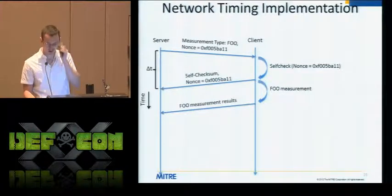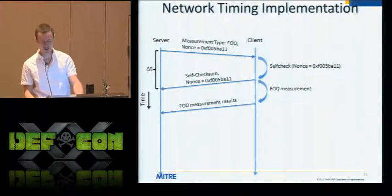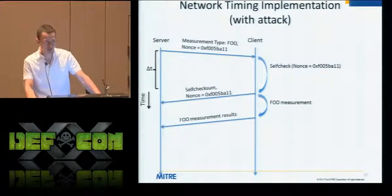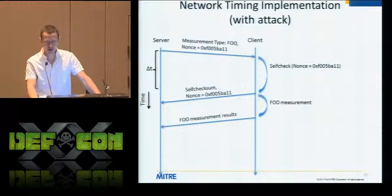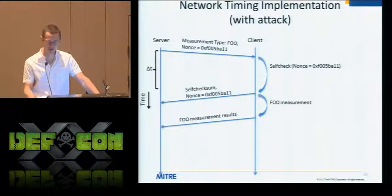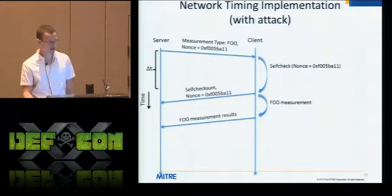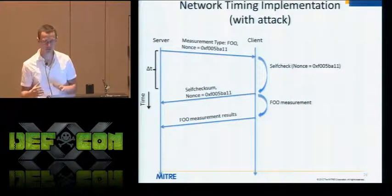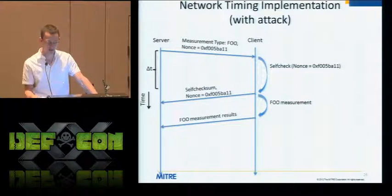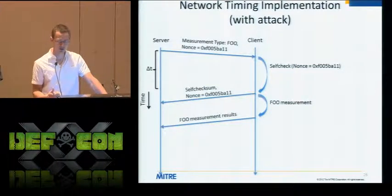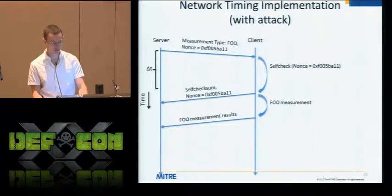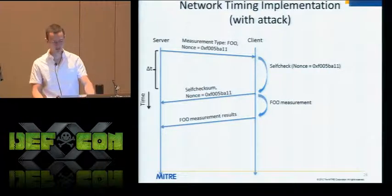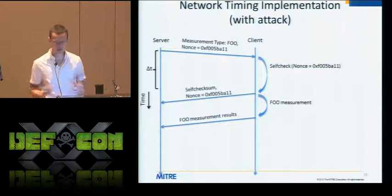When the attacker is tampering with the software, the flow starts the same — nonce to client, client uses it for self-check, self-check goes back. In this case the self-check is correct because the attacker forged the value by tracking DP and replacing tampered bytes with clean ones. But then the server notices the network round-trip time has increased. The delta T is larger than expected. So: your checksum is correct, but it took too long for you to respond, so I don't believe the measurement of the system you also sent. We would flag that as something needing investigation.